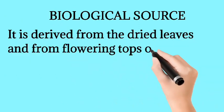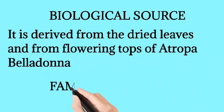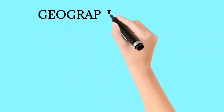Now we take biological source. Atropa belladonna is the dried leaves and flowering tops of Atropa belladonna, family Solanaceae.